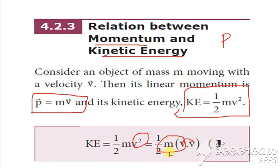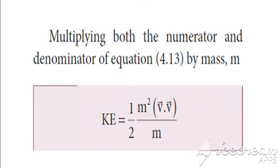Now, instead of this MV, multiply numerator and denominator by the term M. So we already have MV into V. If you multiply by M, that becomes M square divided by M. This can be written as M square equals M into M, and we already have the term V into V.